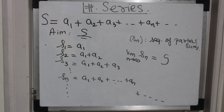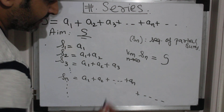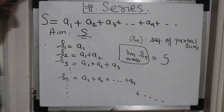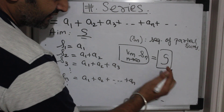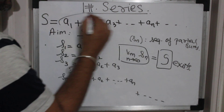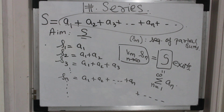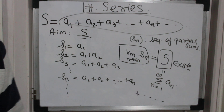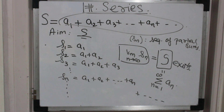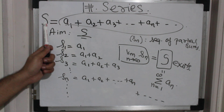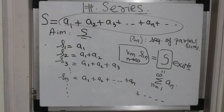Now, since S is seen as the limit of something, we have the notion of convergence and divergence — the same as in sequences. When the limit exists and S is a finite number, we say the series converges. So if such an S exists for summation aₙ from n=1 to infinity, we say the sequence of partial sums converges, or equivalently, the series is a convergent series. If such an S does not exist, we say the series is a divergent series.